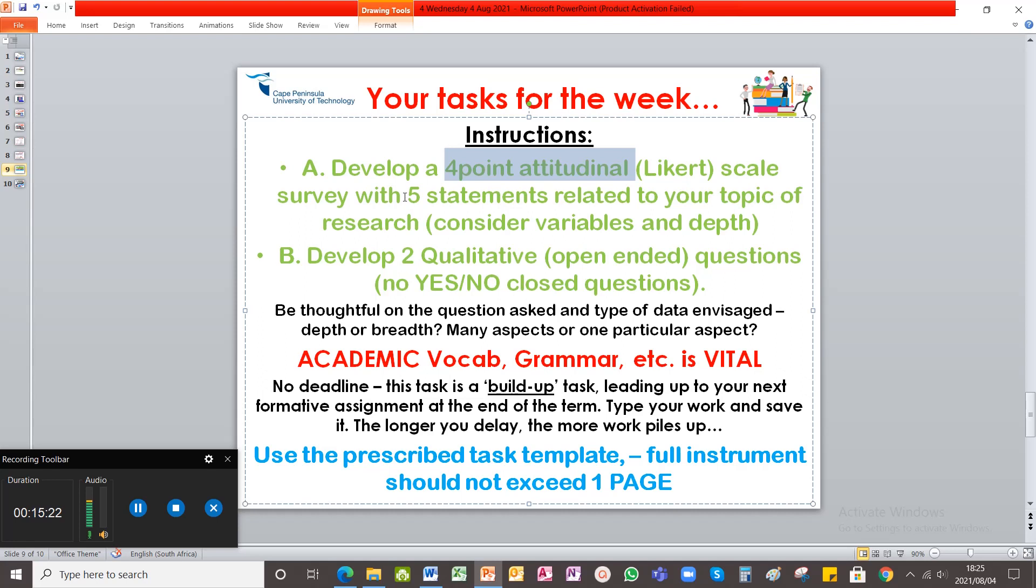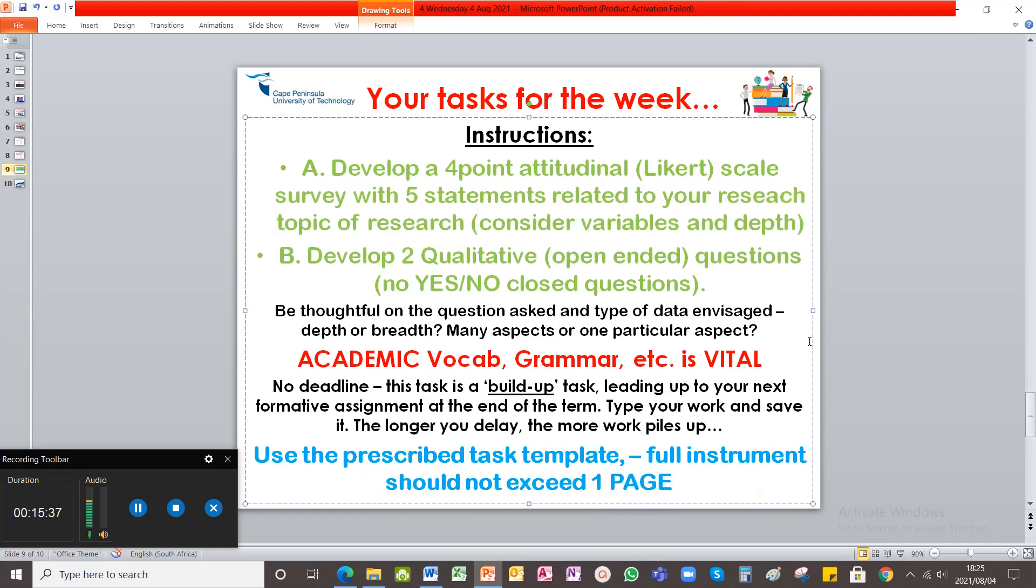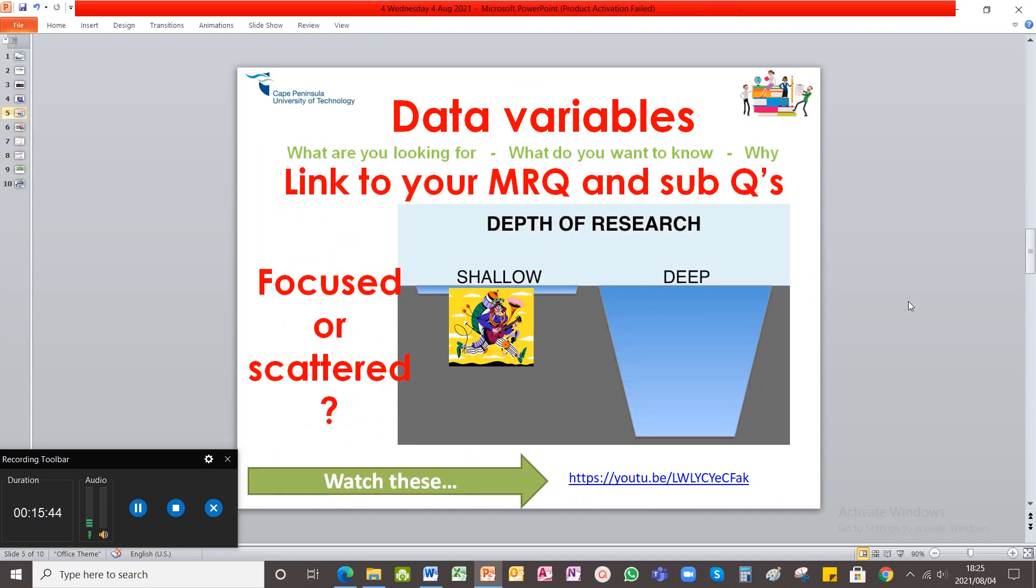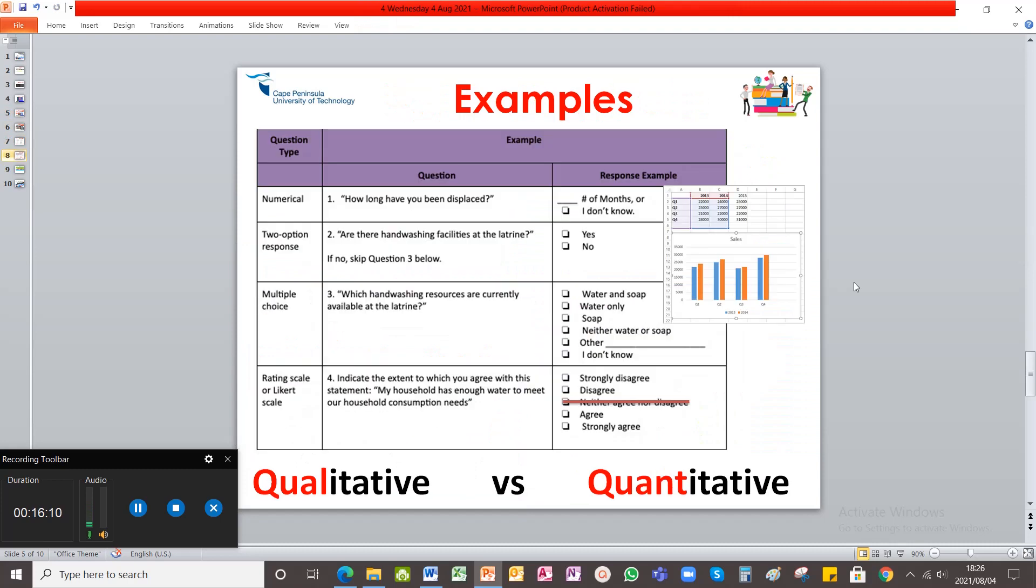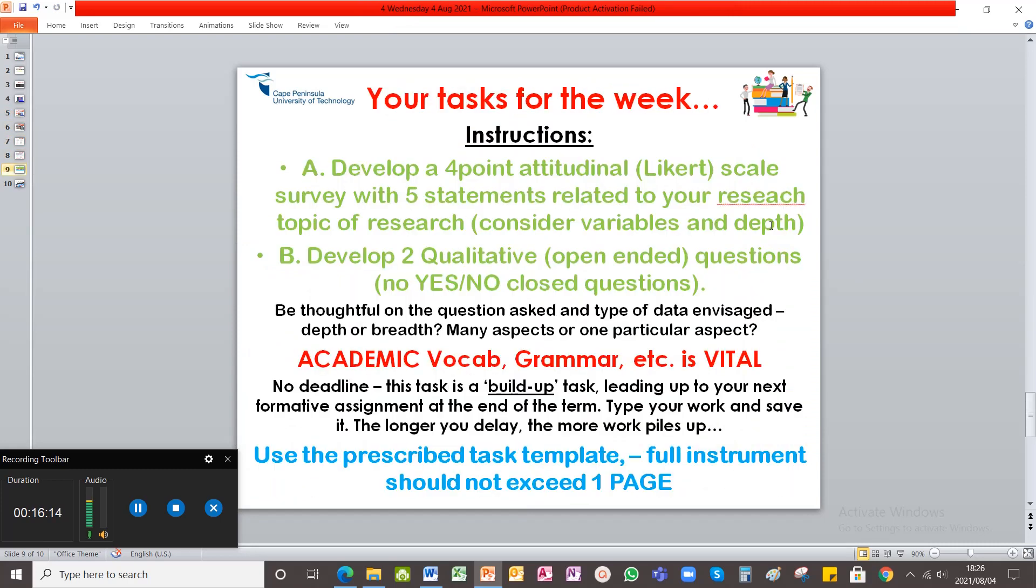And your attitudinal survey must have five statements. Remember, not questions, statements. So your statements must be related to your research topic. It must not be any silly questions. It must be specific to your topic. And please consider the variables. So I'll take you back to that slide. How deep do you want the research to go or how shallow? Are you going to focus on one variable or multiple variables? So remember the example of bullying. Am I only going to look at cyberbullying or am I going to ask five different questions on different types of bullying? Or am I going to ask five statements on one type of bullying? Focused or scattered? So please think carefully and consider your depth.